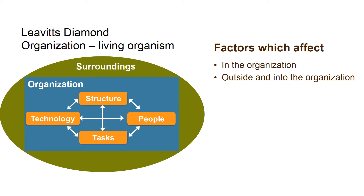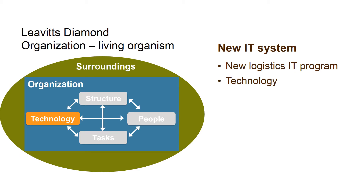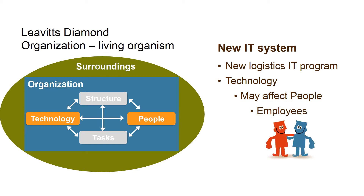You must imagine the organization as a living organism that continuously adapts to both internal changes and external influences. Here are some examples placed in Levitt's model. A new IT system, such as a new logistics IT program, is placed in the component Technology. It may affect the component People, as the employees in the logistics department need to be trained to handle the new program.